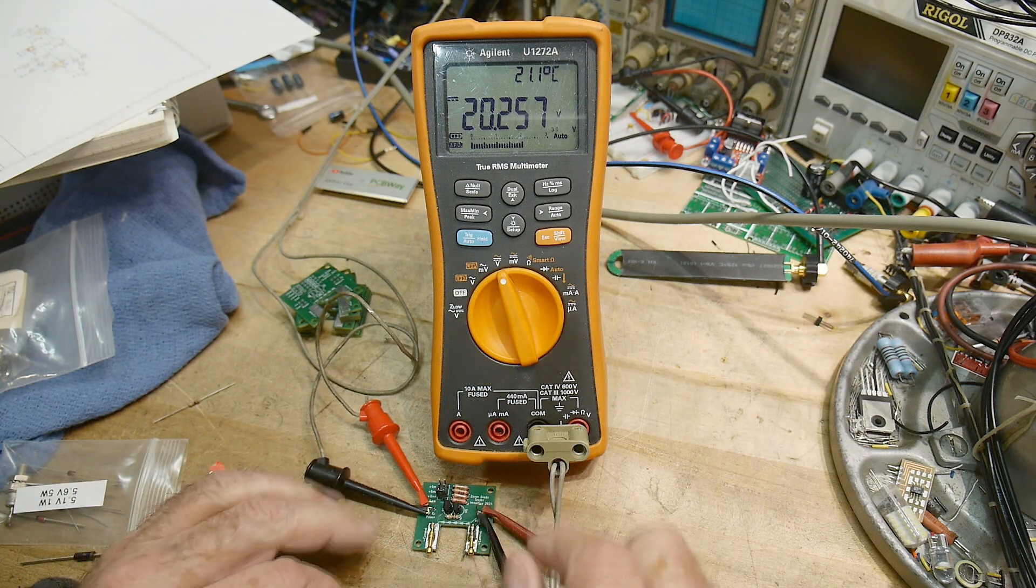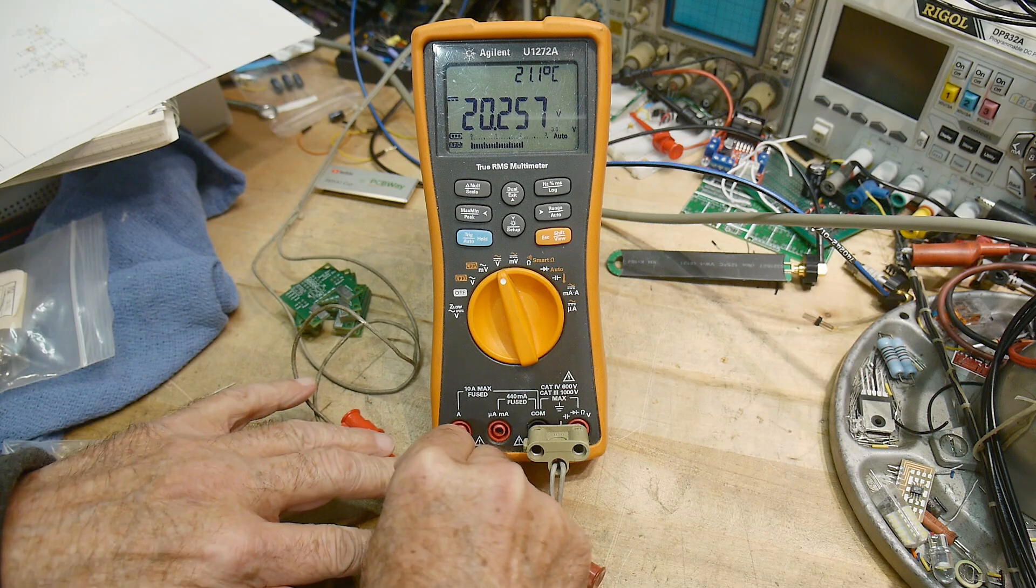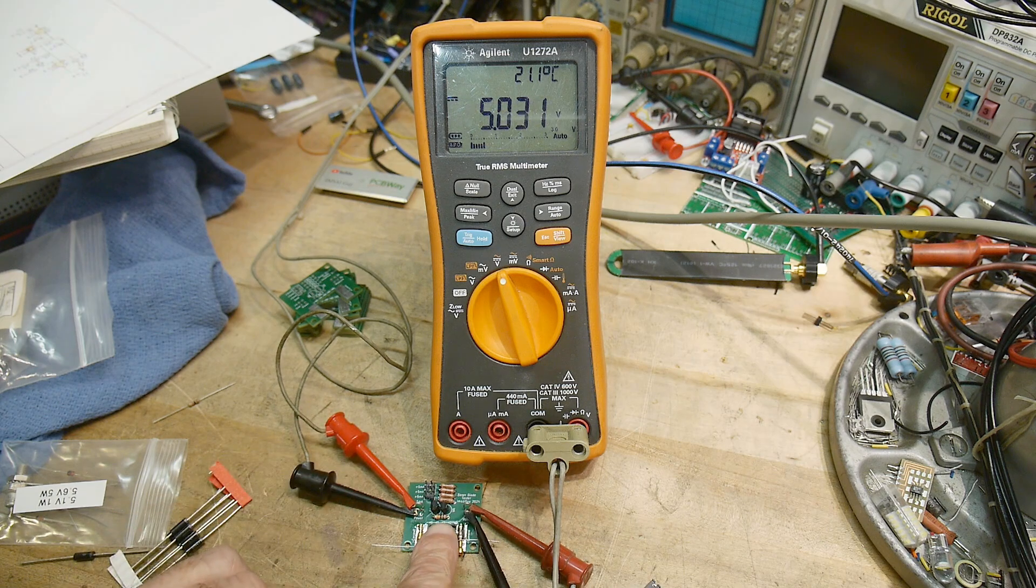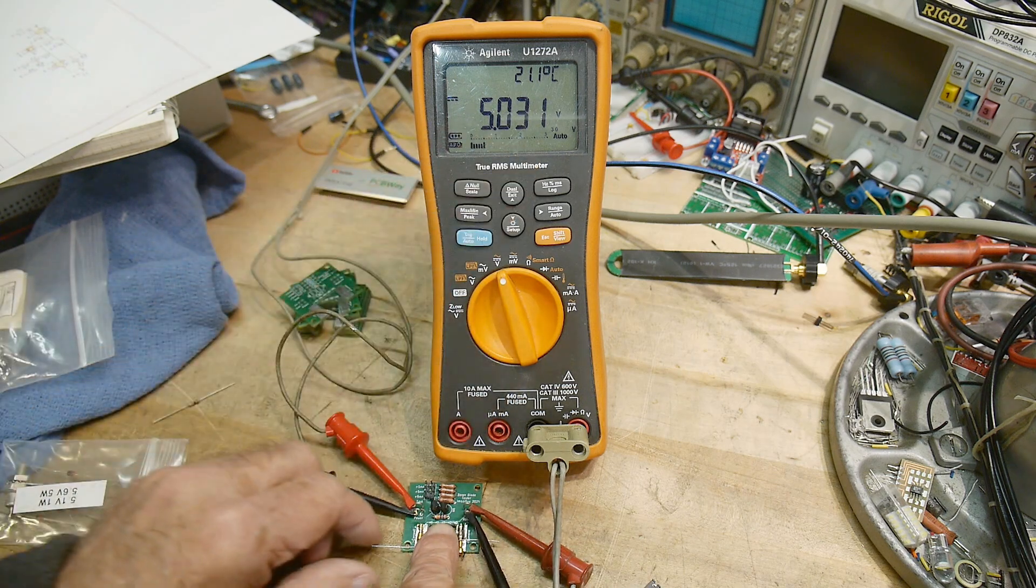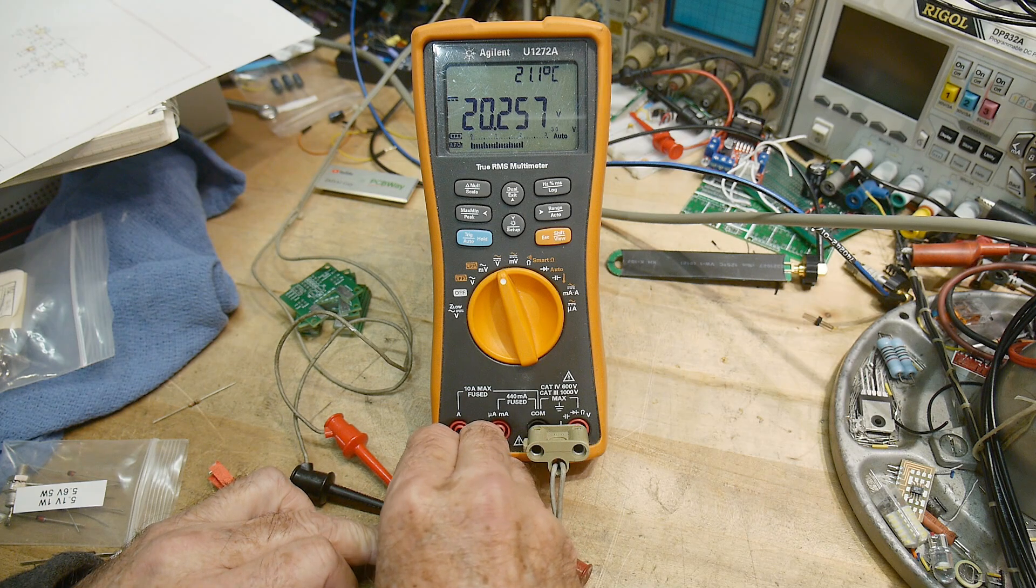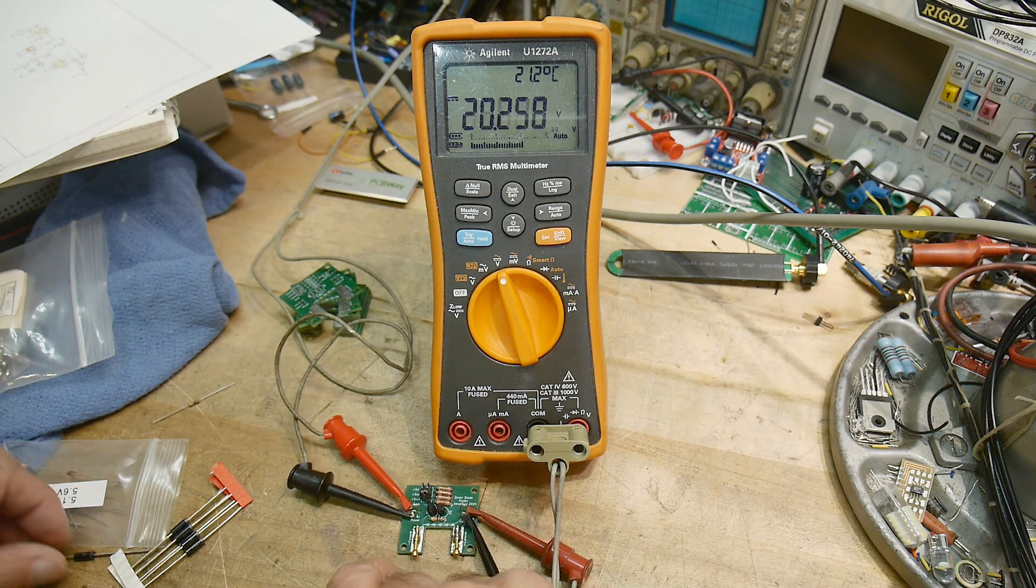And I have it programmed for 10 milliamps right now. Let's move it to 5 milliamps, and we'll test it again. And you can see it's 5.03, so there's a difference between 5 and 10 milliamps on the little tester here. And yeah, that one works really good.